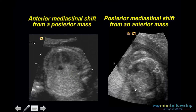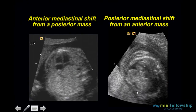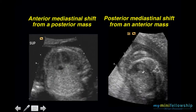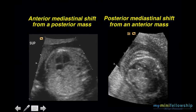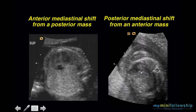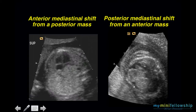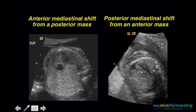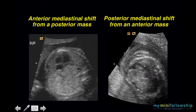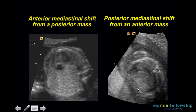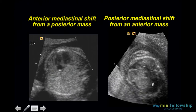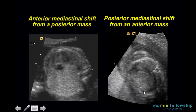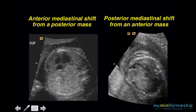Here in this transaxial scan of the fetal thorax, you can see the left ventricle and the right ventricle anterior wall. Here's the anterior chest wall, and clearly the anterior wall of the right ventricle is not in contact with the anterior chest wall because it is being pushed posteriorly by this rather formidable mass.